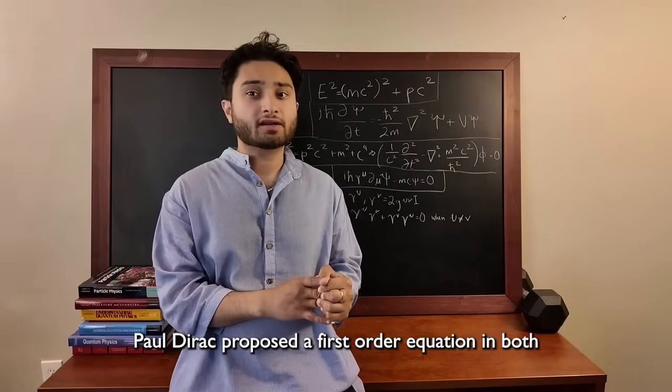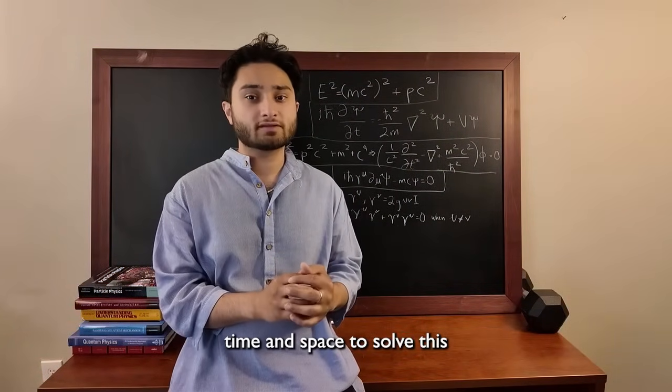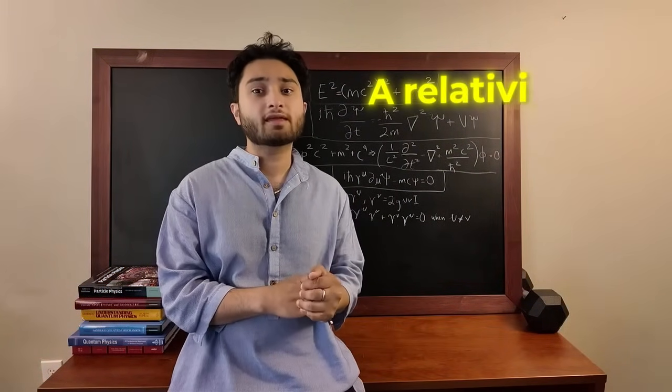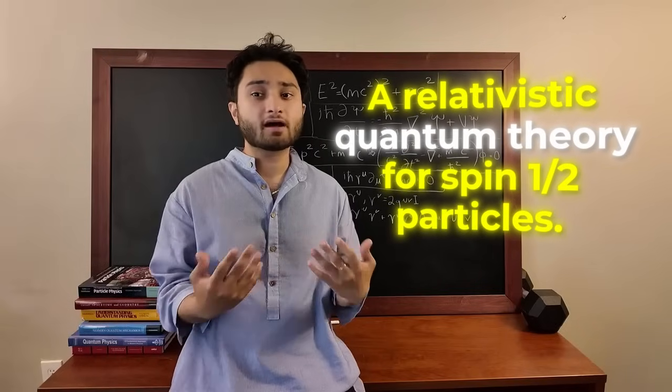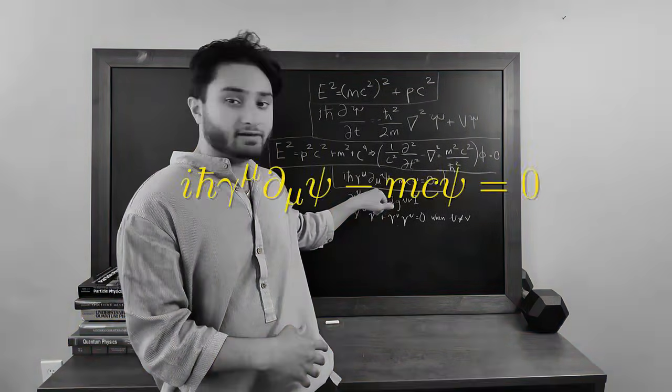Paul Dirac proposed a first-order equation in both time and space to solve this. His goal was to come up with a relativistic quantum theory for spin-half particles, and he proposed this thing right here.